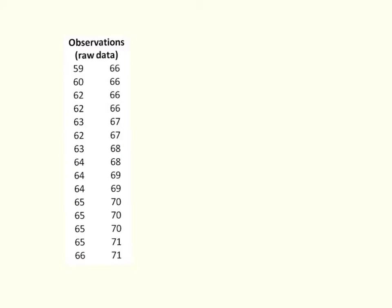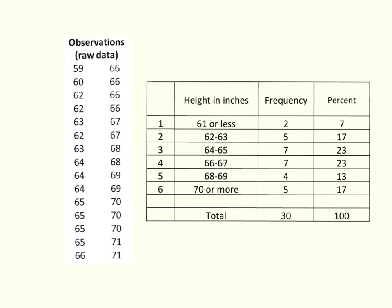This shows the raw height data from the 30 people in our sample, from the last video on distributions. This is just the raw data, one height for each of 30 people. And then this shows the frequency distribution created from the raw data. This is a much more simple, straightforward way of looking at the data. We've got our bins of heights, the number of observations in our sample that fall into each of the bins, and then the percent of data that falls into each of the bins.